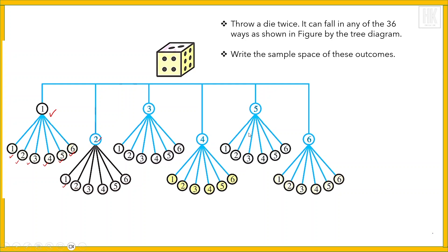Write the sample space for these outcomes. Repeat the experiment by throwing three times and write the sample space of the outcome using a tree diagram. Demonstration: if the dice is thrown once, the sample space will be 1, 2, 3, 4, 5, 6.